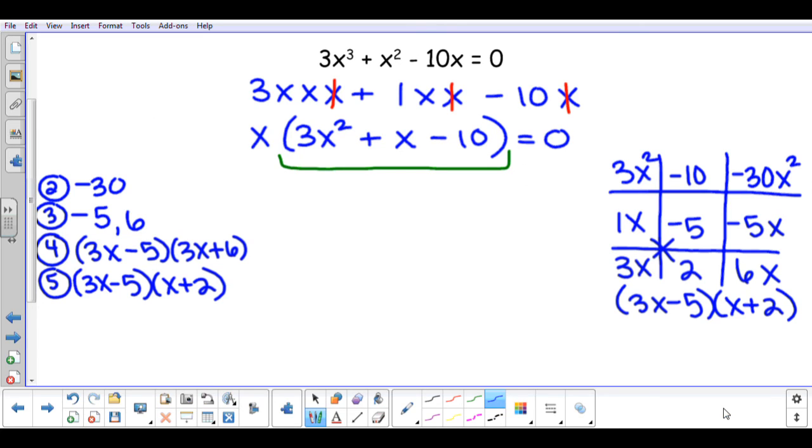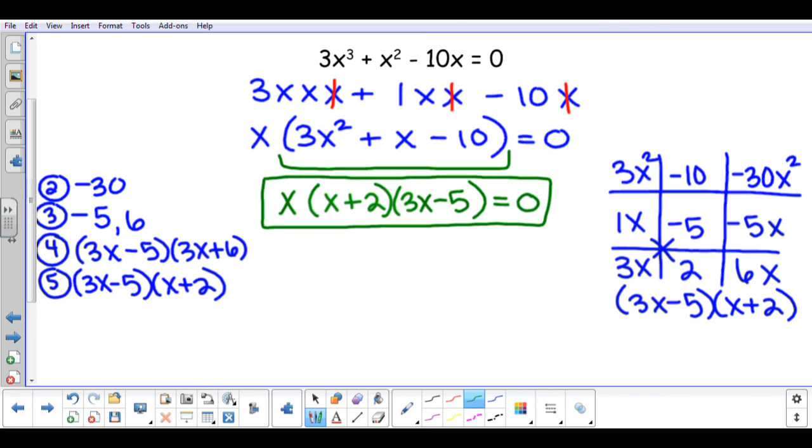3x squared plus x subtract 10 factors to give me x plus 2 and 3x subtract 5. The x that we pulled out in the very beginning comes down in all three pieces, which is now my factored polynomial. So it's x, x plus 2, and 3x minus 5.